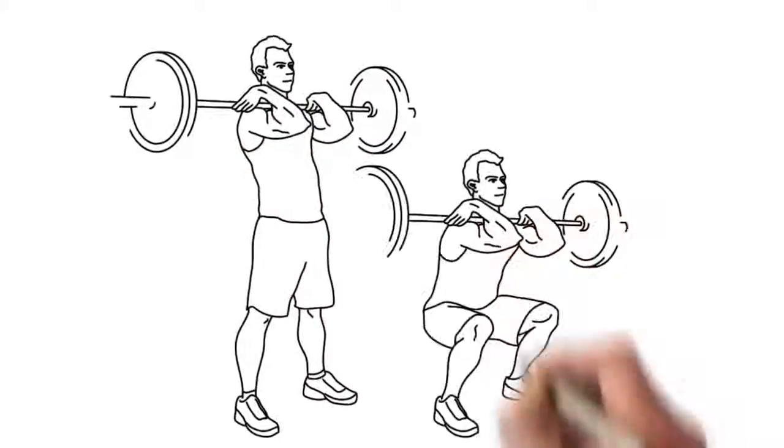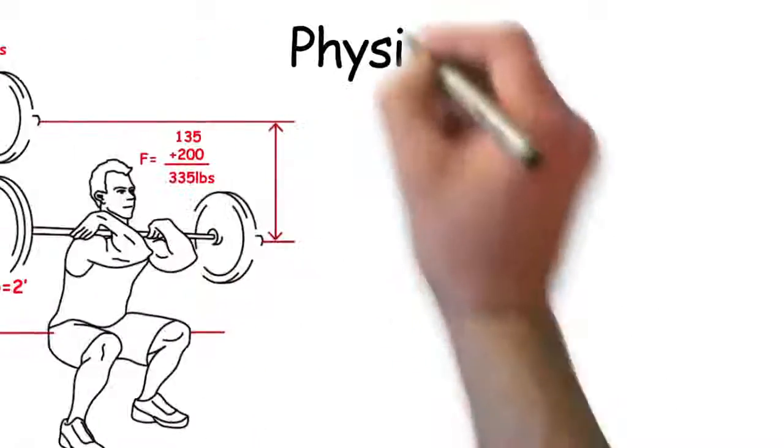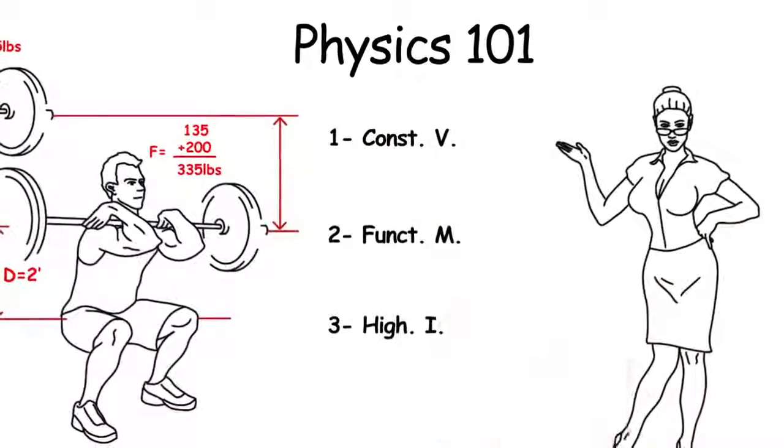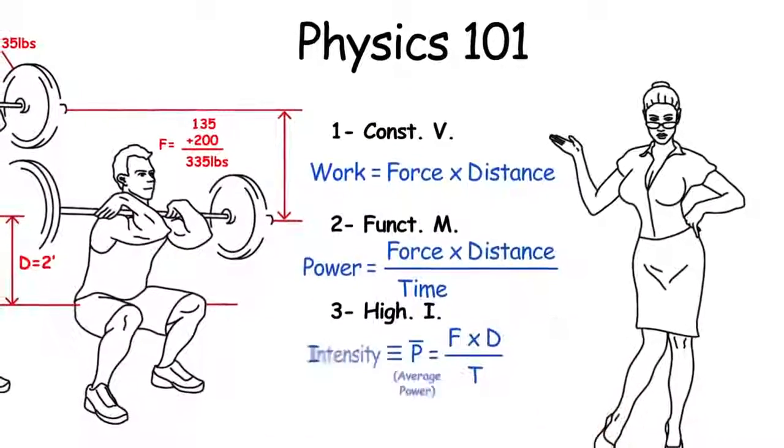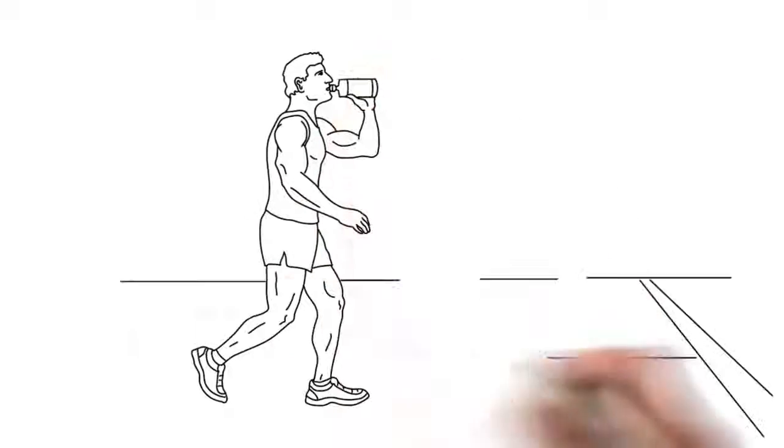Intensity is a measurement of physics, not opinion. It's a key element of fitness. Intensity is measured by how fast you get real work done. Casual jogging is easy and low intensity.